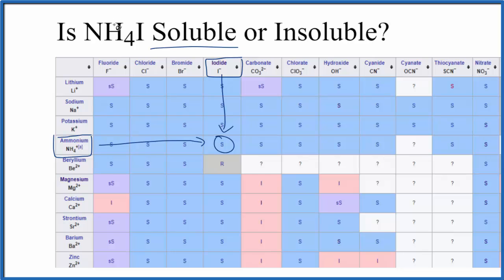What that means is if you put NH4I in water, you're going to get NH4+ and then I-. This will dissociate into its ions.